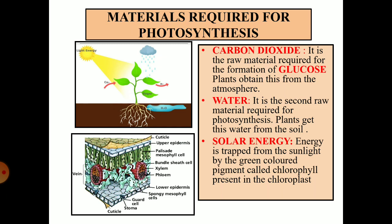Let us see from where we get these materials. Carbon dioxide is the raw material required for formation of glucose; plants obtain this from the atmosphere. Water is the second raw material required for photosynthesis; plants get this from the soil. Solar energy is trapped from sunlight by the green colored pigments called chlorophyll, which are present in the chloroplast.